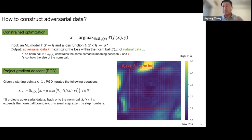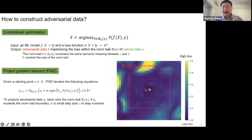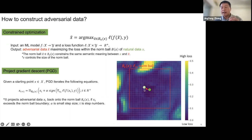Epsilon controls the size of the norm-ball. Projected Gradient Descent (PGD) approximately solves this constrained optimization problem. Given a starting point, PGD calculates the gradient of the loss function with respect to the input. The gradient points to a direction with a slightly larger loss. We iteratively get new points with increasing loss — so on and so forth — until finally we get a red point with the highest loss, which can make machine learning models inaccurate.